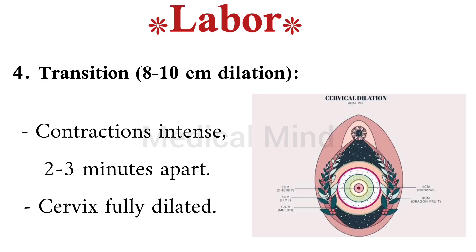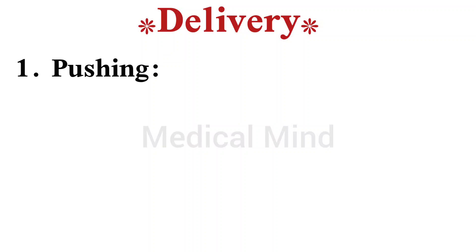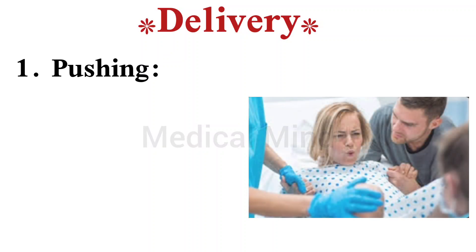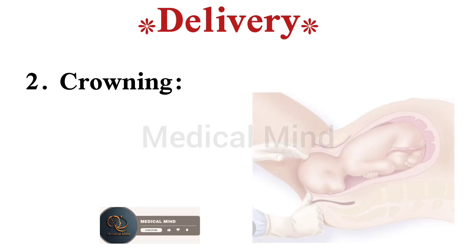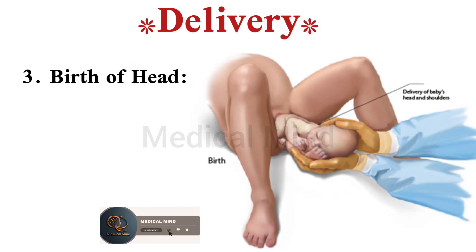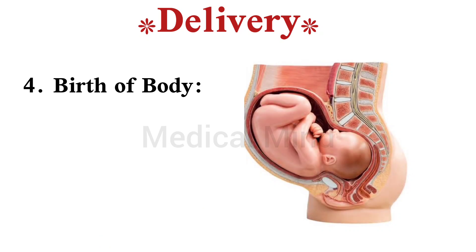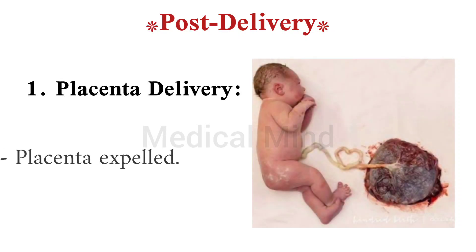Cervix fully dilated. Delivery: one, pushing — mother pushes baby out, contractions aid in delivery. Two, crowning — baby's head appears. Three, birth of head — head emerges. Four, birth of body — rest of baby's body delivered.